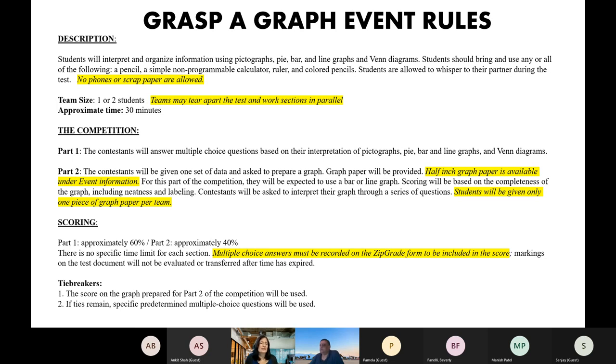Essentially, this event is a written test to challenge kids to be able to interpret information from different kinds of graphs. And for the elementary event, we only use pictographs, pie graphs, bar graphs, line graphs, and Venn diagrams. So it's narrowed down to just those types of graphs.